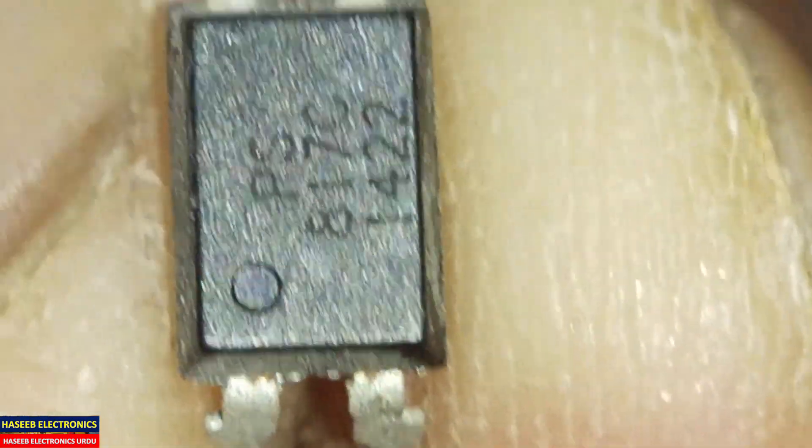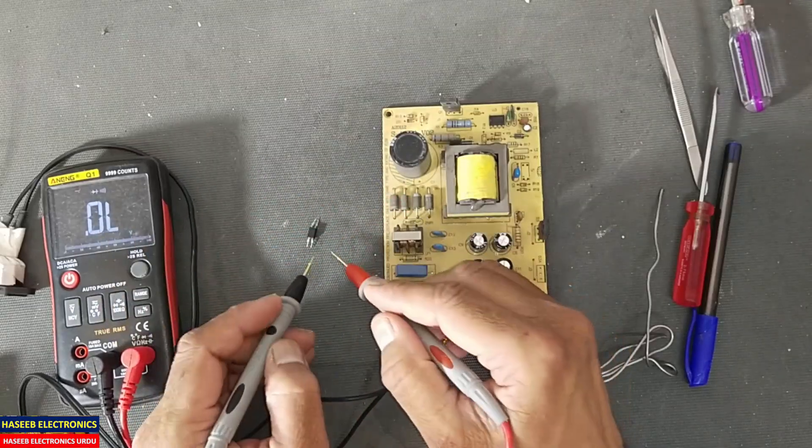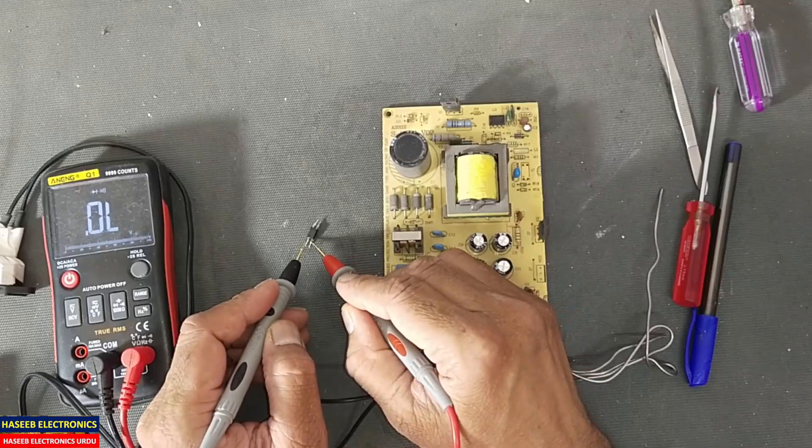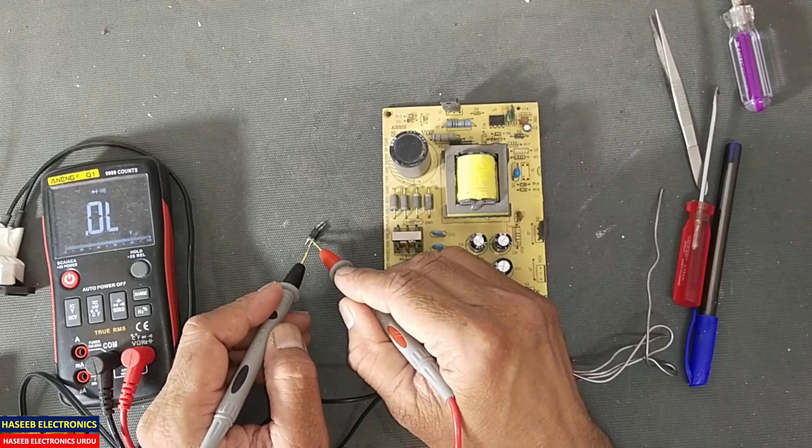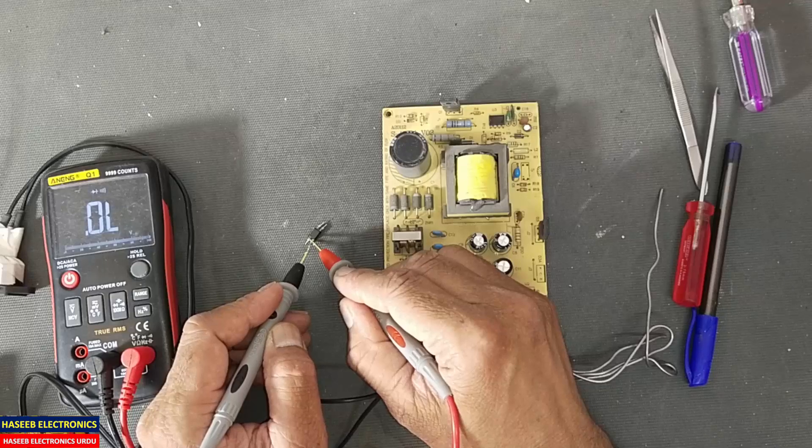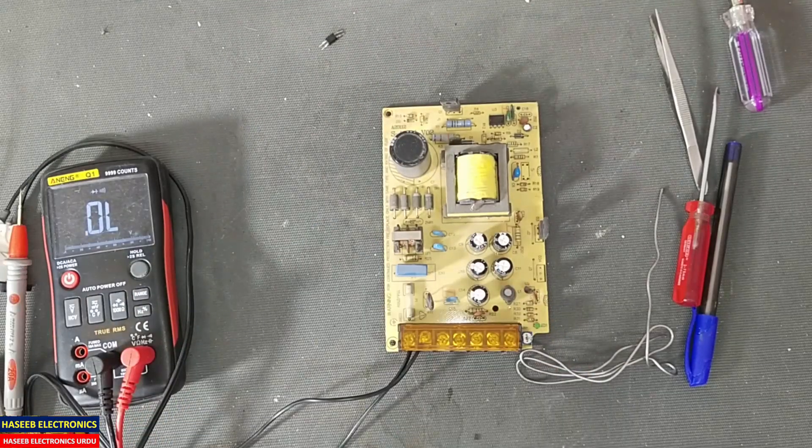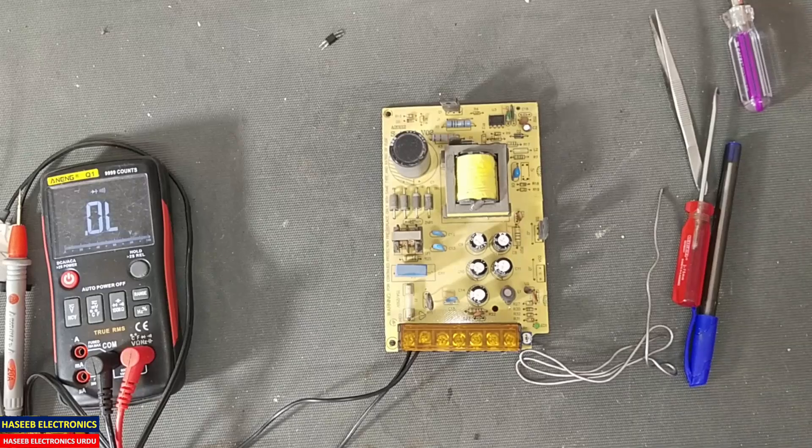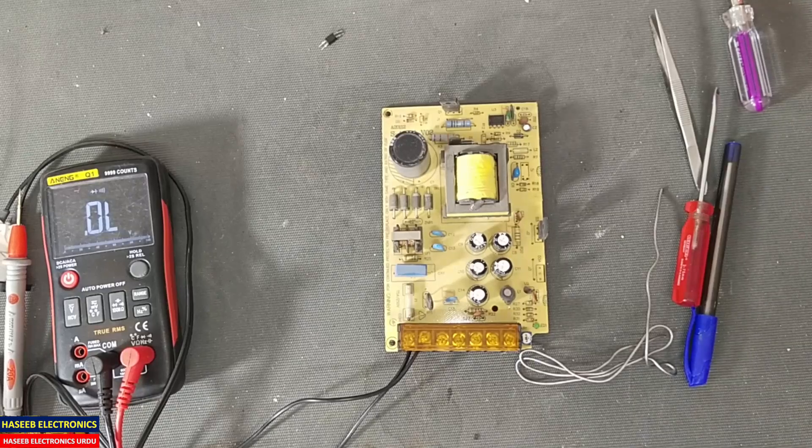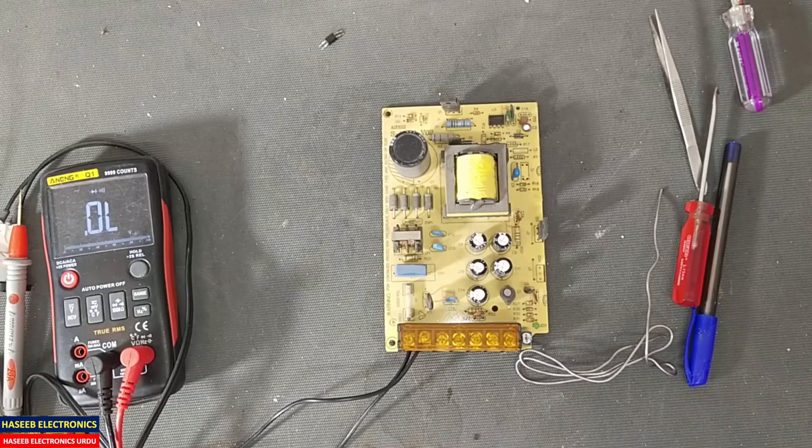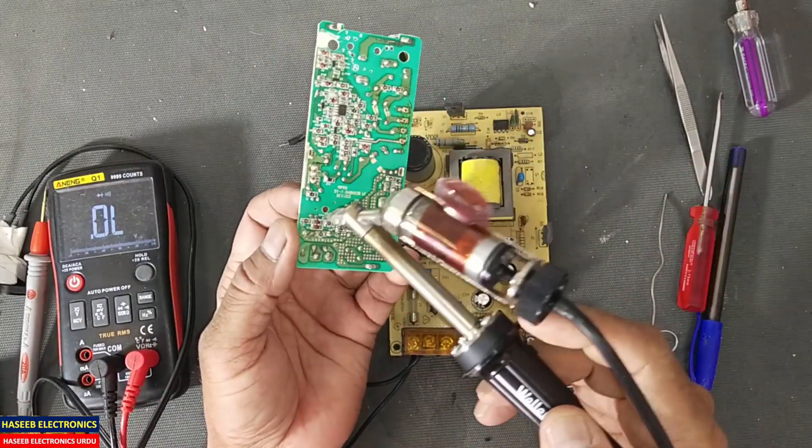Yes, it is PC817C. Set multimeter to diode mode, connect between pin 1 and 2 - so it is open. Now we will replace it with some seal to pick up lock. Now I will remove from this power supply.